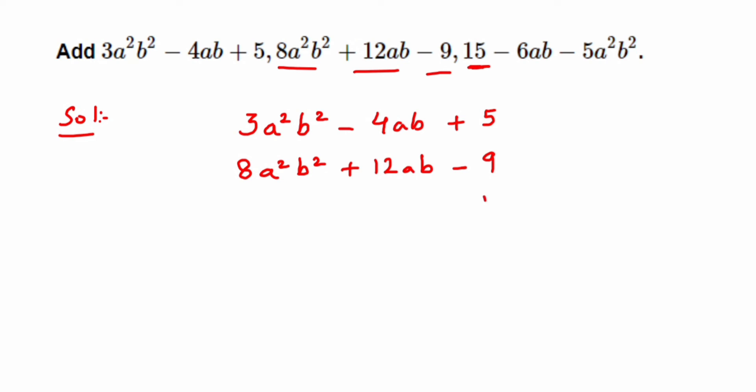Then -6ab comes below 12ab, and the last one is -5a²b², which will come below 8a²b². That's it. Once we've written this, we don't have to look for the variables, just add up the coefficients.